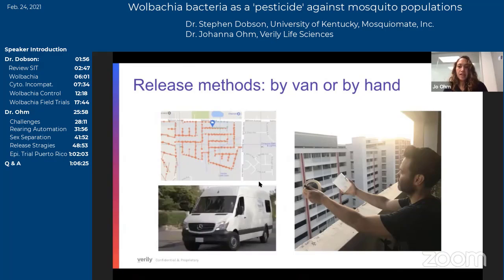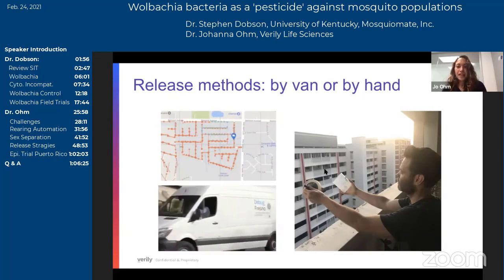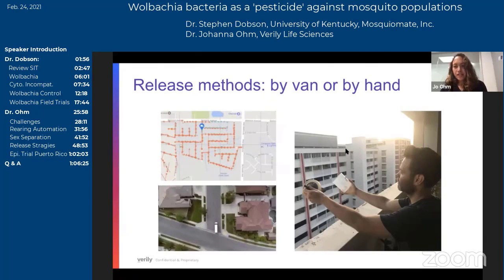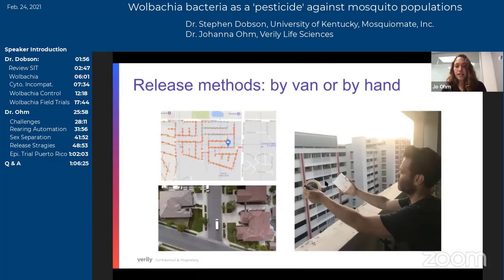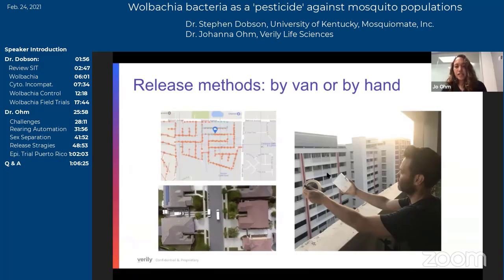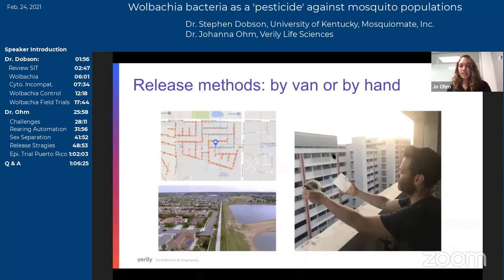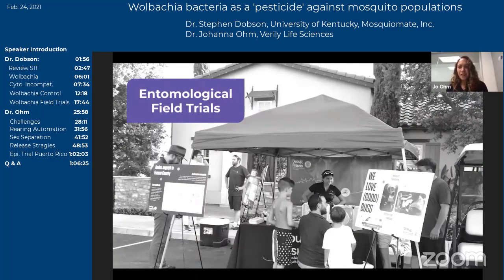Since Fresno, we've expanded into other areas that are really different in terms of cityscape and landscape. On the right, you can see a picture of our Singapore release site in Tampines. The buildings are really different — tall, high-rise apartment buildings with lots of outdoor balconies that might have plants or tiny pots that mosquitoes love to breed in. For sites like this, we've developed alternative technologies. Instead of releasing on the ground, we're also working on containers that can be used for manual releases, spreading these mosquitoes to places where they might be hiding on upper-level stories.